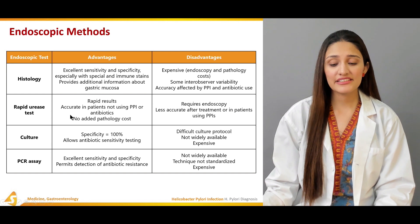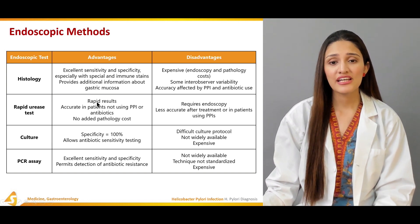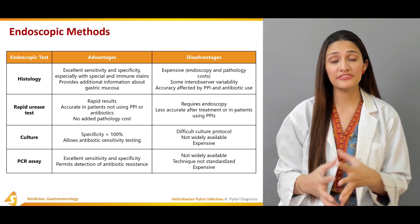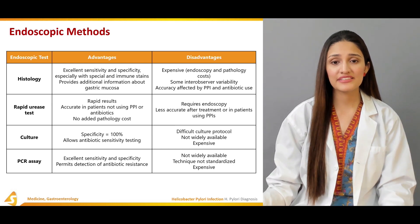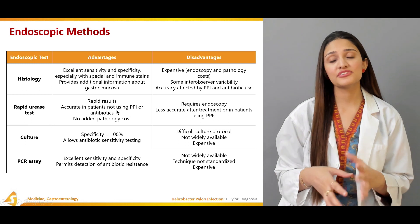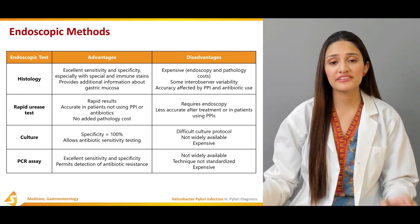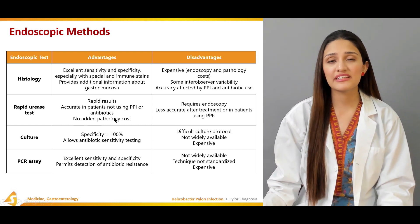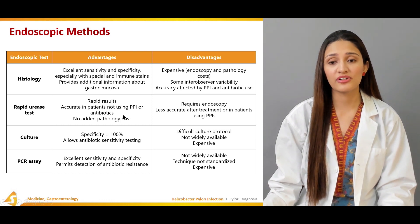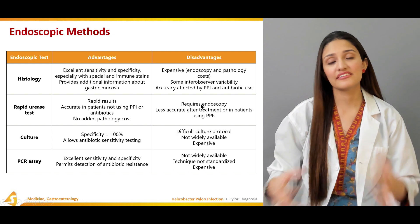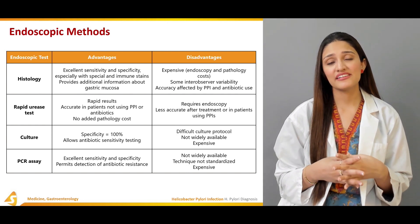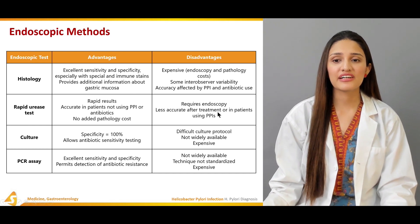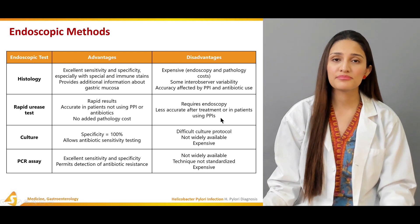The second endoscopic test is the rapid urease test. Its most important advantage is that it is very rapid, giving results within 1-2 days. It is accurate regardless of proton pump inhibitor or antibiotic use and has no additional pathology cost. The disadvantage is that it requires an endoscope, which is difficult for patients, and it is less accurate after treatment in patients using proton pump inhibitors.